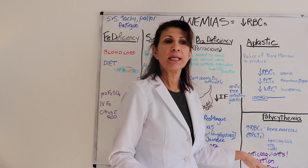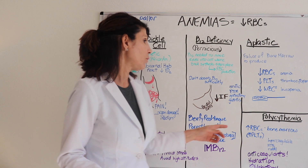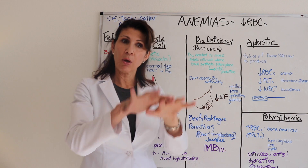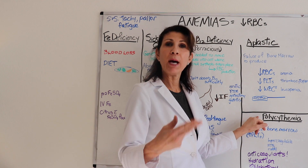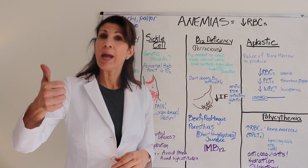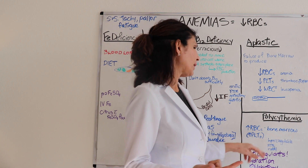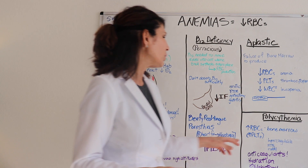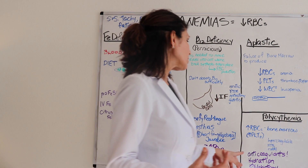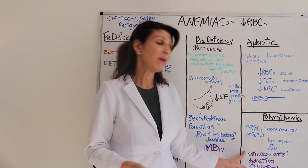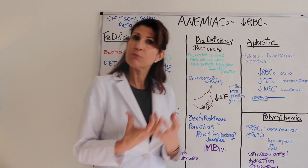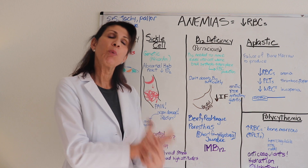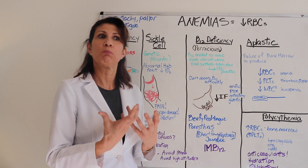Polycythemia vera is kind of the opposite of aplastic anemia — it's overproduction of red blood cells from the bone marrow. Just as aplastic anemia diminishes all components, polycythemia elevates all of them: too many red blood cells, too many platelets. This puts patients in a hypercoagulable state with a much higher risk of clot formation and higher blood pressure. Treatment includes anticoagulants, staying well hydrated (because the blood is more viscous), and phlebotomy on a case-by-case basis to remove portions of blood volume.